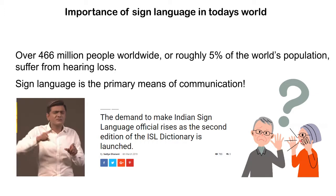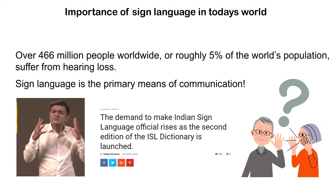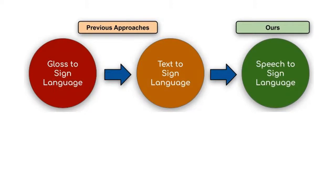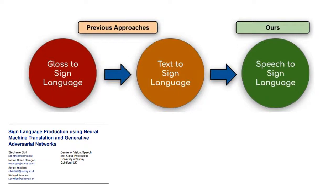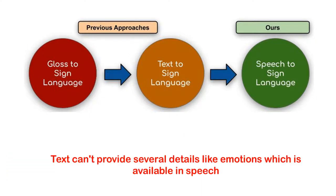Sign language generation is of paramount importance for communicating effectively with people suffering from hearing loss. Generating sign language from different modalities has been attempted by researchers for a long time. Initial attempts focused on generating sign language from stand-alone glosses. However, glosses fail to provide long-term contextual information and were soon replaced by text sentences in natural language. Even though text provides longer contextual information than glosses, it still fails to provide details like emotion,